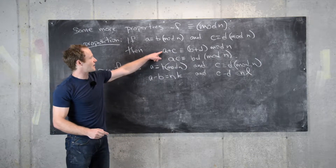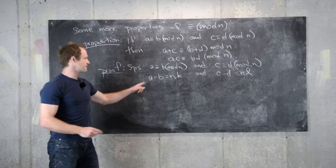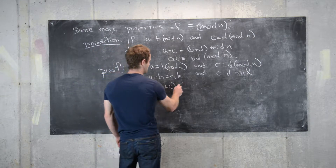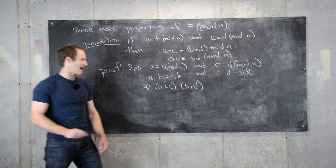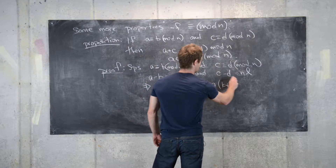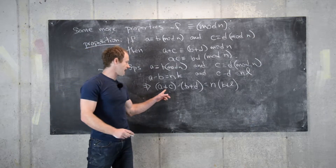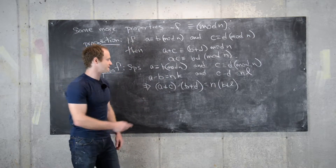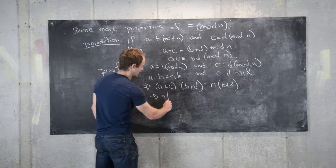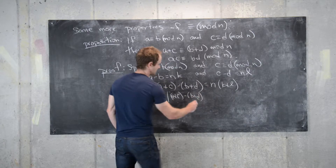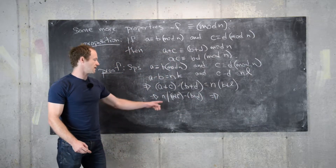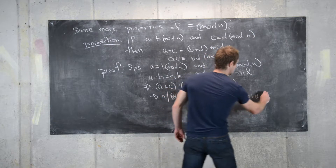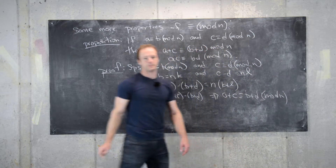Now we want to get a plus c and b plus d out of this. We can just add these two equations, and that gives us a plus c minus b plus d, distributing the minus sign as needed, is equal to n times k plus l. In other words, a plus c minus b plus d is a multiple of n, so n divides a plus c minus b plus d. That tells us a plus c is congruent to b plus d mod n, as needed.